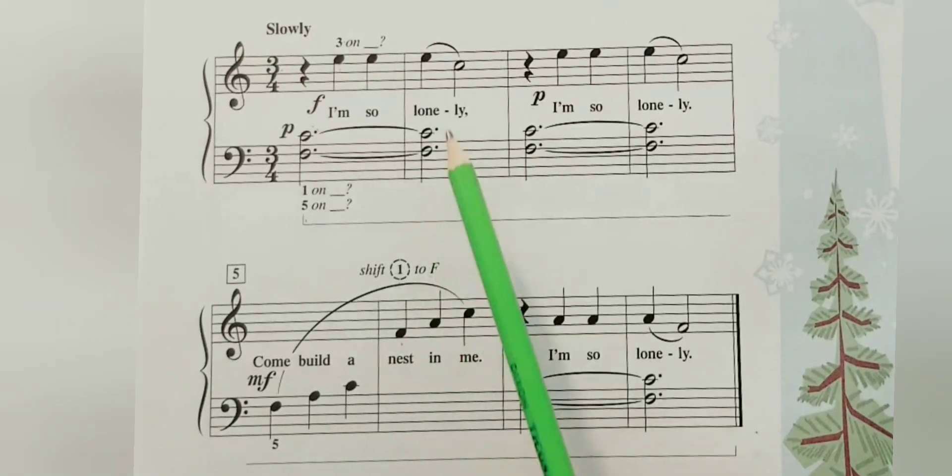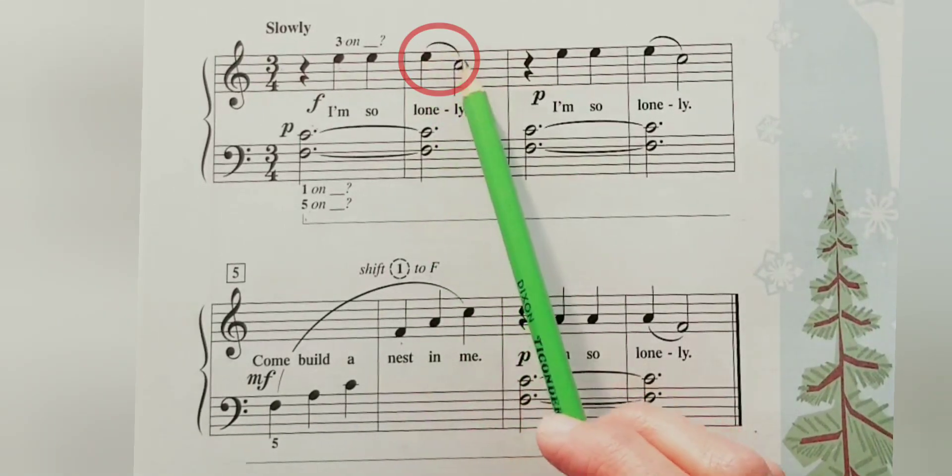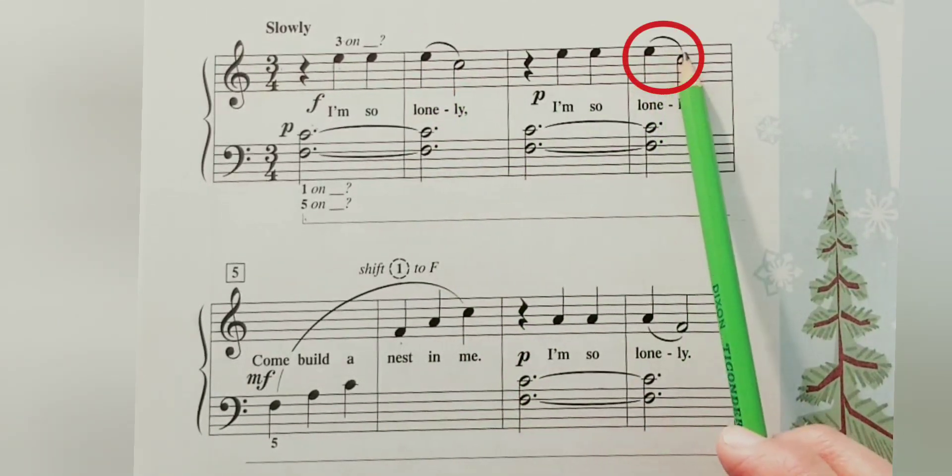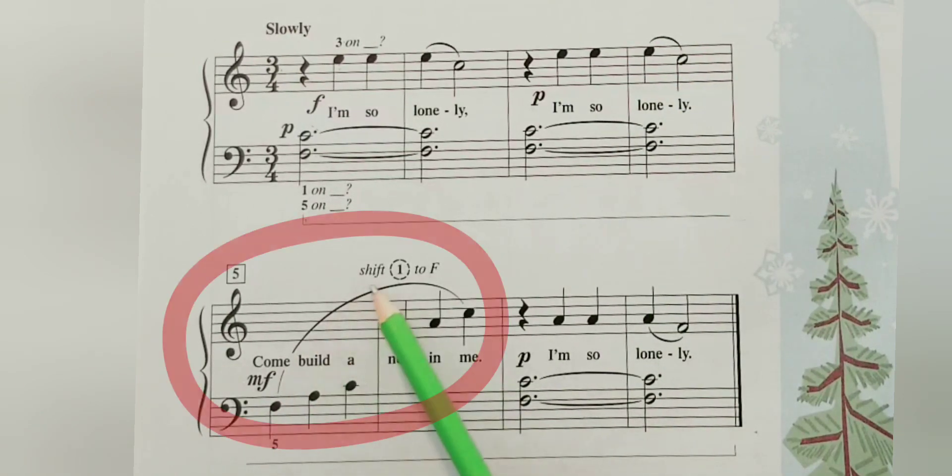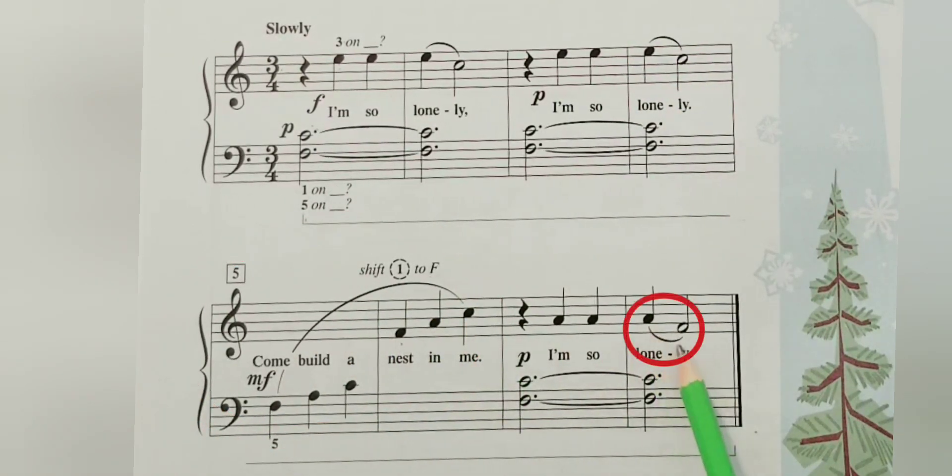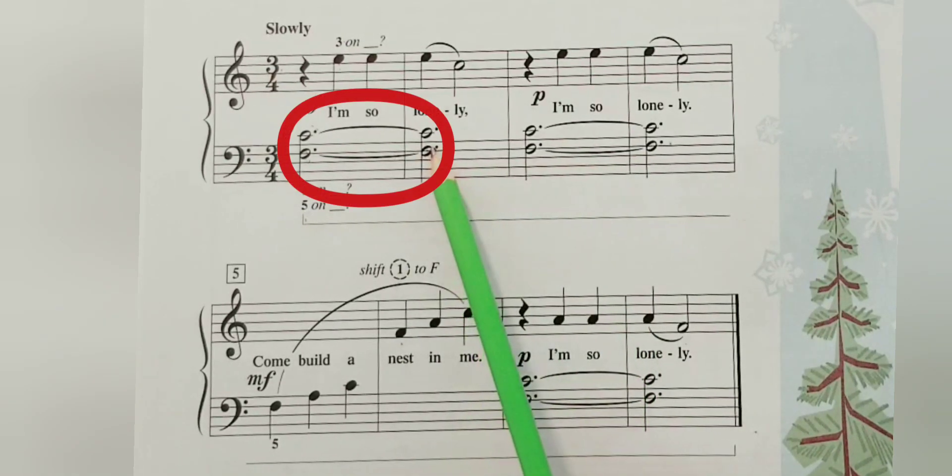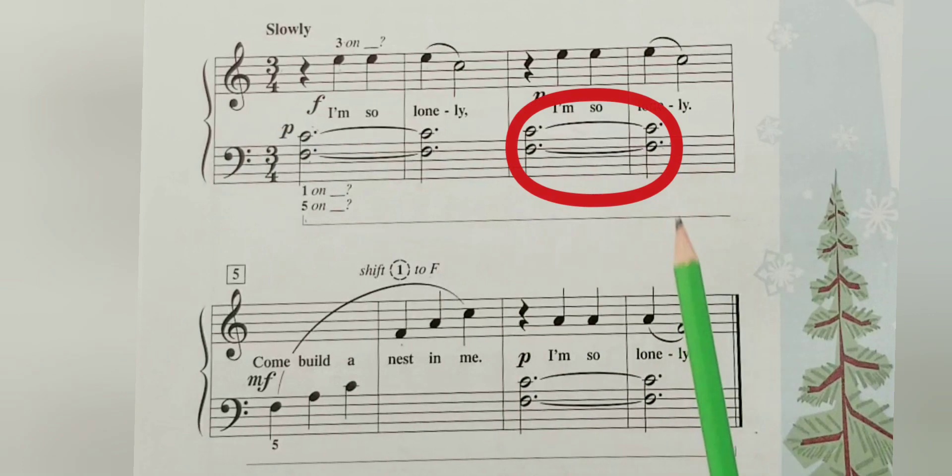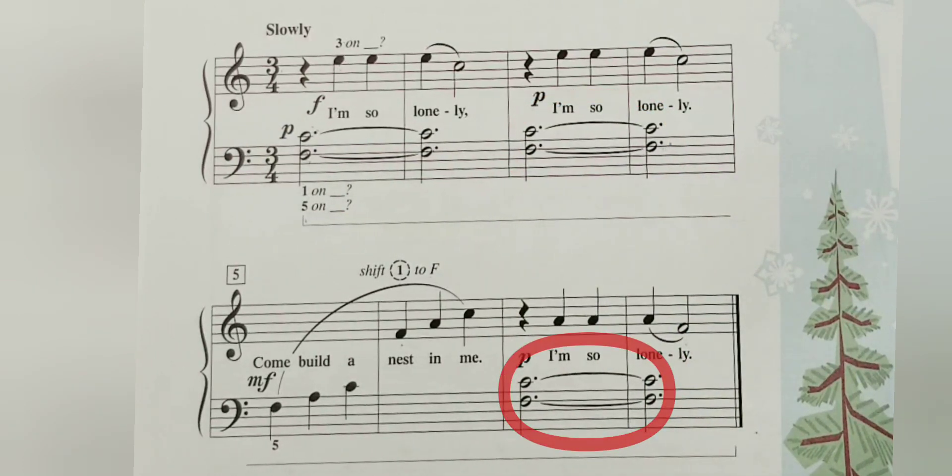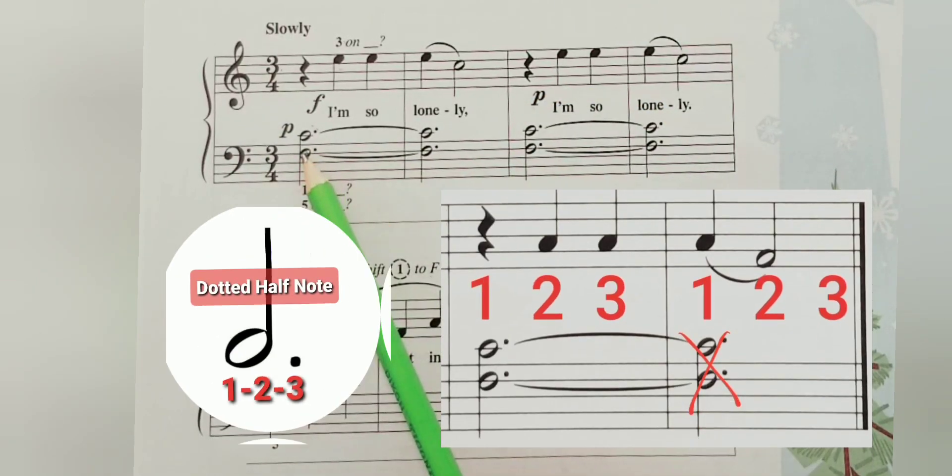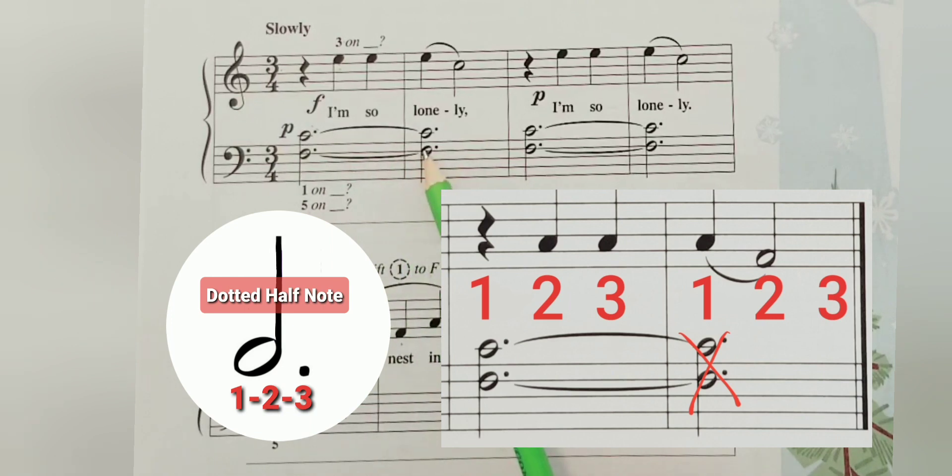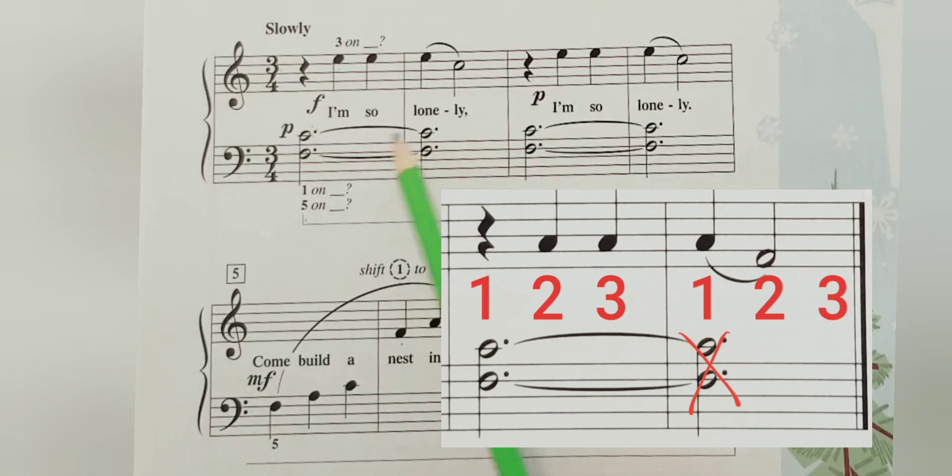As you can see we have connected notes to play legato. See the slurs over here and over here. We are going to have tied notes on measure two, measure four and measure eight. Three counts because it's a dotted half note but then they are tied to another dotted half note. So we hold one, two, three, then hold and count one, two, three.